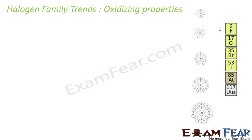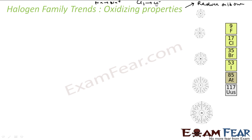The next topic is the oxidizing property. These halogens have an oxidizing property. An oxidizing agent is one which oxidizes other elements while reducing itself — that is, decreasing its own oxidation state. For example, Na going to Na⁺ is oxidation on sodium's part, meaning sodium has reducing property. But Cl₂ going to Cl⁻ means chlorine is reducing itself from oxidation state 0 to minus — so chlorine has oxidizing property.